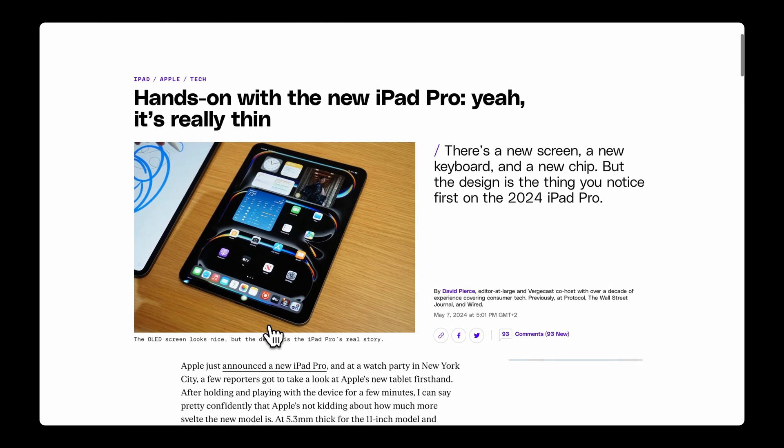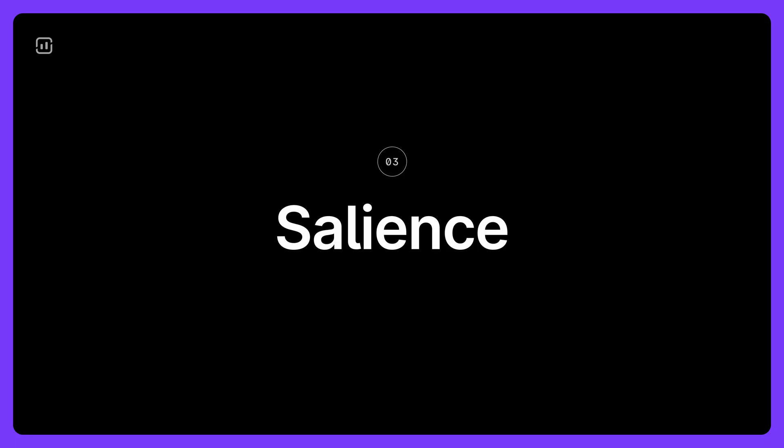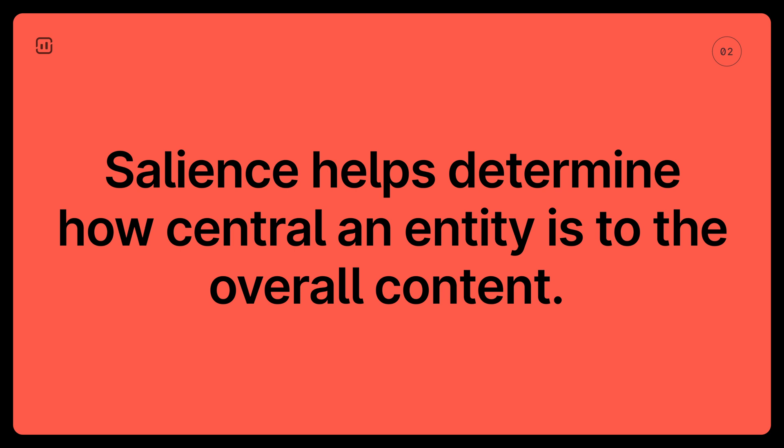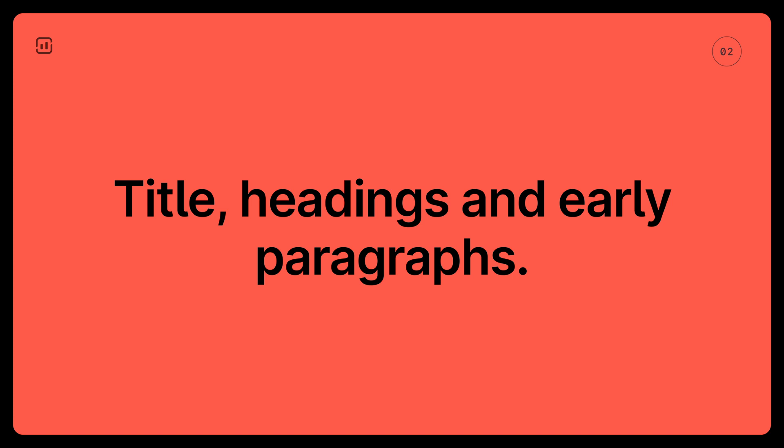Categories in NLP refer to text classification into predefined groups or topics based on its content. For instance, a news article about a new technology product might be categorized under technology and gadgets. This can influence how your content is indexed and ranked for various search queries. The final component is Salience. Salience measures the importance or prominence of an entity within a given text — it helps determine how central an entity is to the overall content. For example, in a blog post about the history of Apple Inc., the entity Apple would likely have a high salience score. Therefore, you should mention it multiple times throughout your content, especially in key areas like the title, headings, and early paragraphs. In SEO, ensuring that key entities have appropriate salience can signal to search engines the main focus of your content, which can affect its visibility for related searches.